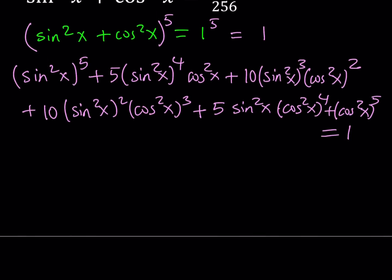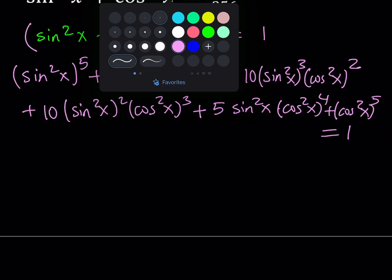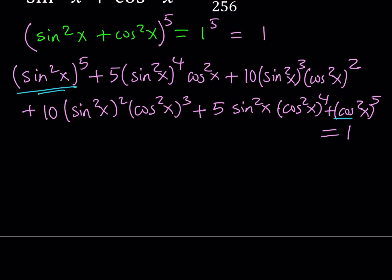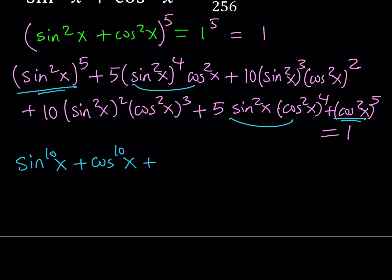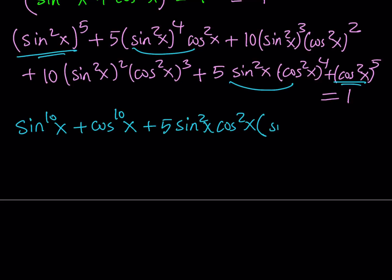We're going to put the terms with the same coefficients together. Notice that these two terms are going to give us what we're looking for — sine x to the 10th power plus cosine x to the 10th power. And then we'll use the other terms together. At the same time, let's factor out some terms. In this case, I have 5 sine squared x cosine squared x as a common factor.